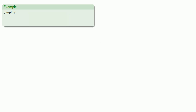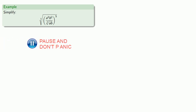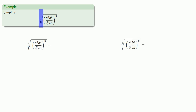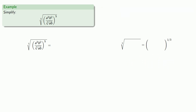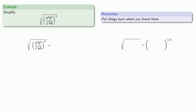No matter how complicated the expression is, we can always apply these rules one step at a time to simplify. So if some sadistic monster were to give you something like this — wasn't that on our last exam? — we can still do this by taking the process one step at a time. If the expression is particularly messy, focus on the very last thing that was done. Here, the very last thing was to take the cube root, so we can ignore the radicand for a moment. Since this is a cube root, it's the same as raising something to the one-third power.